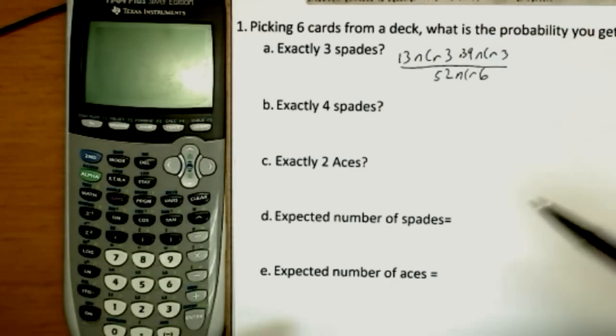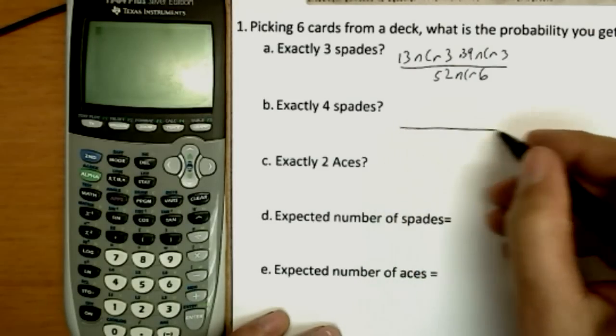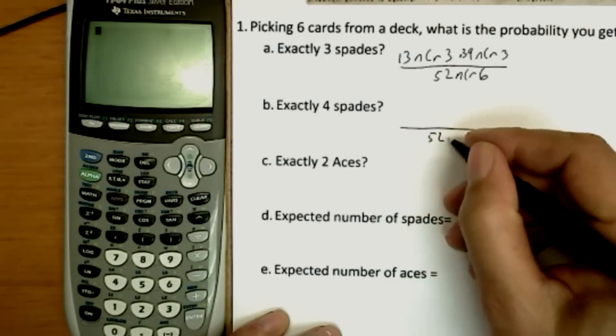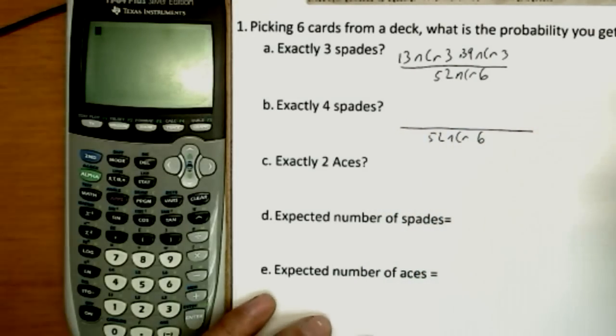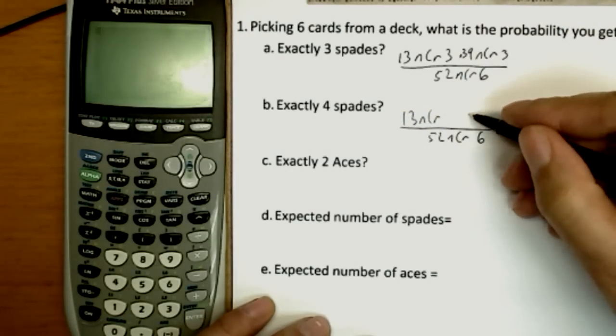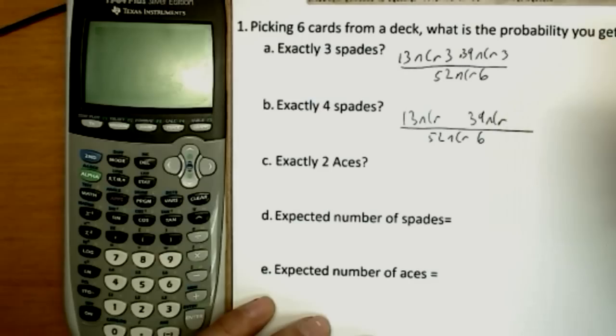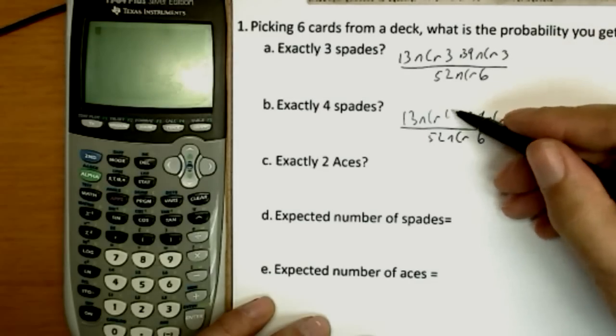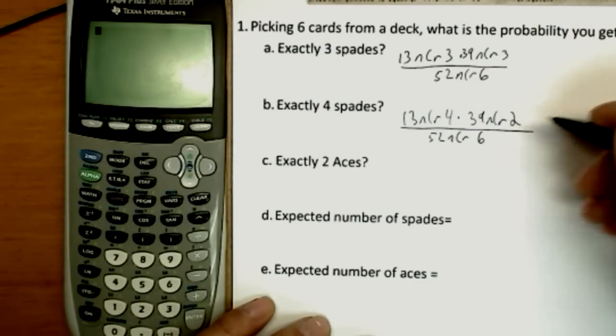Now exactly four spades is going to be the same thing. 52 NCR6 on the bottom won't change, but now we're going to change how we select them. So 13 NCR, 39 NCR, we're going to switch this a little bit. We're going to pick four from the spades compared to two from the non-spades.